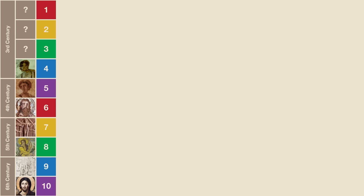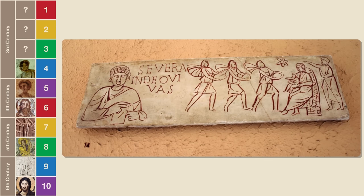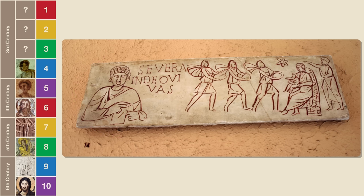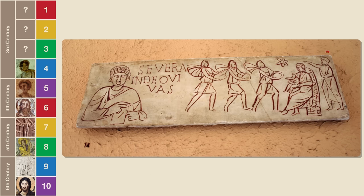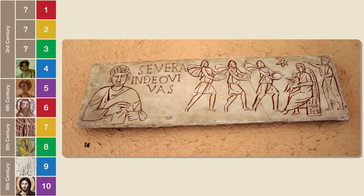We've now come to our final three images. The 3rd oldest image we have of Jesus is from this sarcophagus lid, which is inscribed with the words 'Severa in Deo Vivas.' The person shown to the left of the words is not Jesus — that's likely an image of Severa, the woman who was buried in this particular sarcophagus. 'In Deo Vivas' means 'may you live with God.' Jesus is the baby being held by his mother Mary, with Joseph standing behind them, and in front of them are the three wise men and the Star of Bethlehem. So image number three is basically a Christmas image.